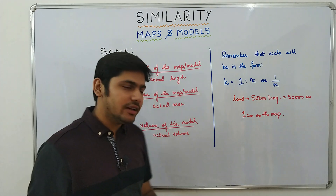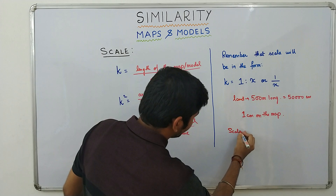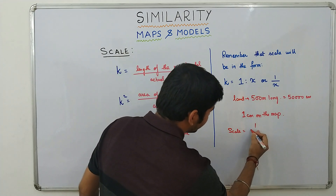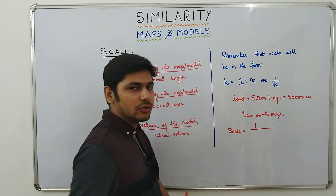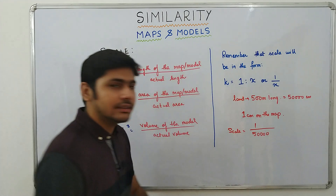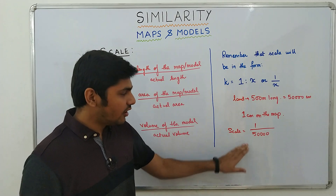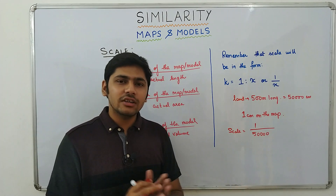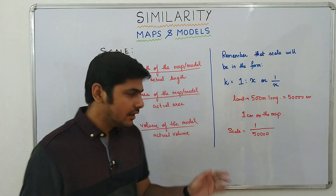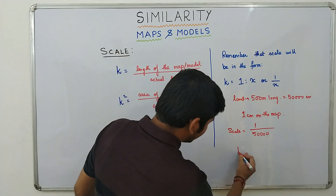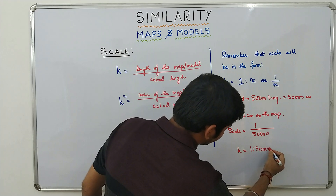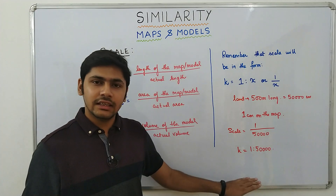So what is scale here? Scale is equal to the length on the map — which is 1 centimeter — divided by the length on the actual ground — which is 50,000 centimeters. This is the scale we use to contract or shrink something to represent it on a smaller map or model. This is also written as K = 1 : 50,000.